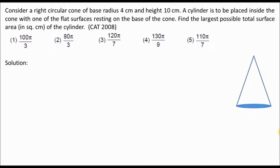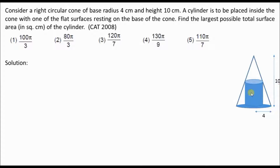There is a right circular cone of height 10 cm and radius 4 cm. A cylinder is to be placed inside the cone with one of the flat surfaces resting on the base of the cone. We have to find the cylinder such that the surface area obtained is the maximum possible.